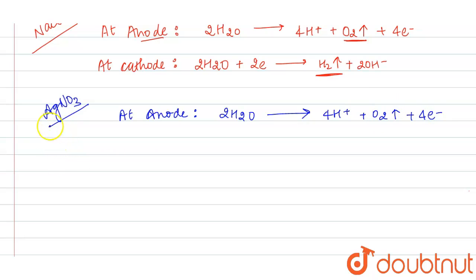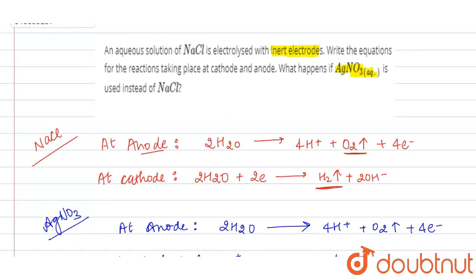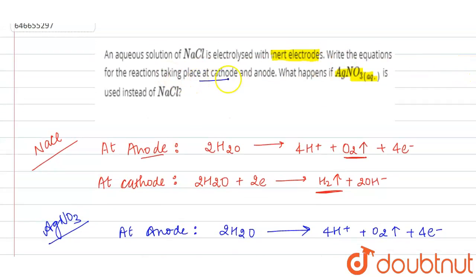But since the reduction potential of Ag is greater than the reduction potential of water, at cathode, silver metal will get reduced by gaining 1 electron to silver solid. So this is our cell reactions, equations of cathode and anode for both the cases. Thank you.